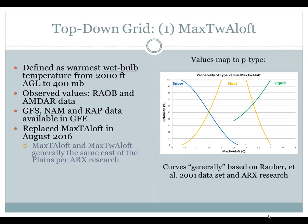For most areas east of the Plains, per our La Crosse research, the Max Wet Bulb Aloft and the Max Temperature Aloft are pretty much the same. However, when you get from the High Plains westward, when it came to determining precipitation type, the Max Wet Bulb Aloft performed much better than the Max Temperature Aloft.